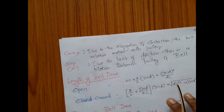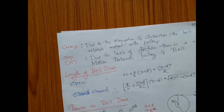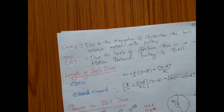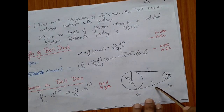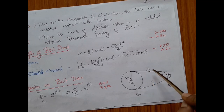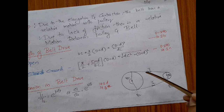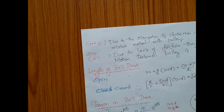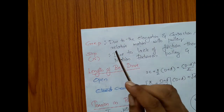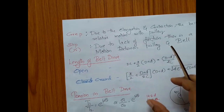Now comes another important terminology: creep and slip. Students usually confuse these two. Both creep and slip are relative motion of the belt on the pulley, but the reasons for this relative motion are completely different. When a belt runs over a pulley, it has a tension side and a slack side. On the tension side it experiences elongation, and on the slack side it experiences contraction. Because of this elongation and contraction, the belt will have a relative motion between the belt and pulley — and that is termed creep.